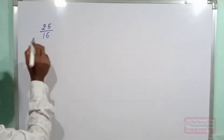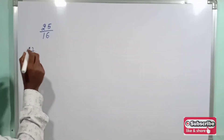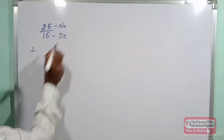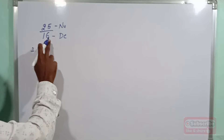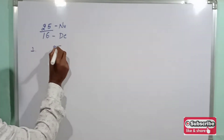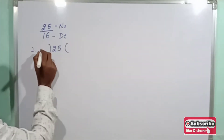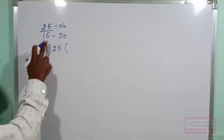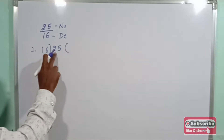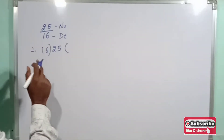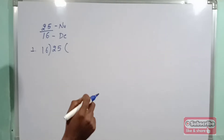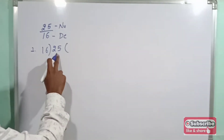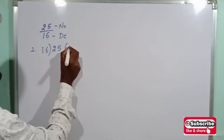The first step: here 25 is the numerator and 16 is the denominator. We divide the numerator 25 by the denominator 16. Now, 16 times 1 is 16, and 16 times 2 is 32, but here we only have 25, so we write 16 times 1 is 16.